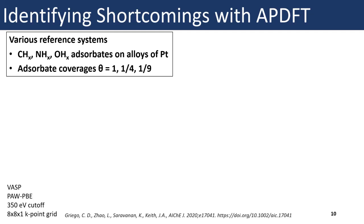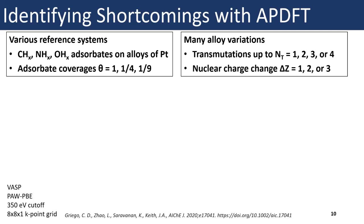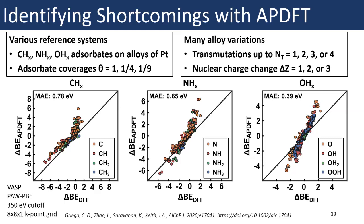To gain more insight, we evaluate predictions with more reference systems. We take reference systems where we have CHX, NHX, and OHX adsorbates — where X is the number of hydrogens around the central atom — binding to alloys of platinum at multiple coverages. We consider many alloy variations with up to NT transmutations up to four, and nuclear charge changes of ΔZ up to plus or minus three. Parity plots for these three data sets show cases that agree well with DFT and cases that do not, motivating us to pinpoint where the shortcomings are.